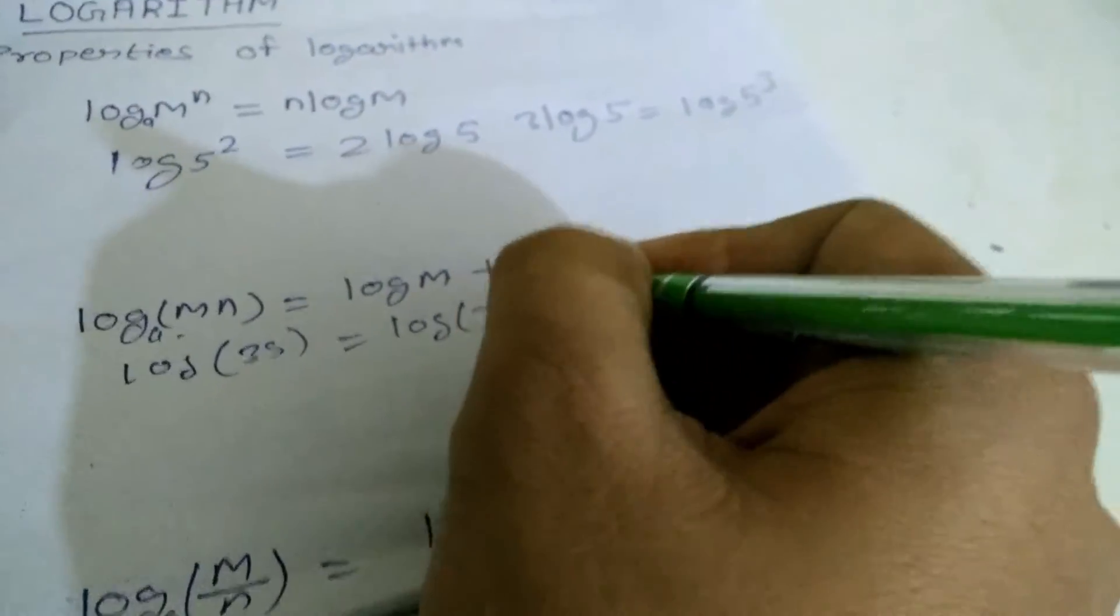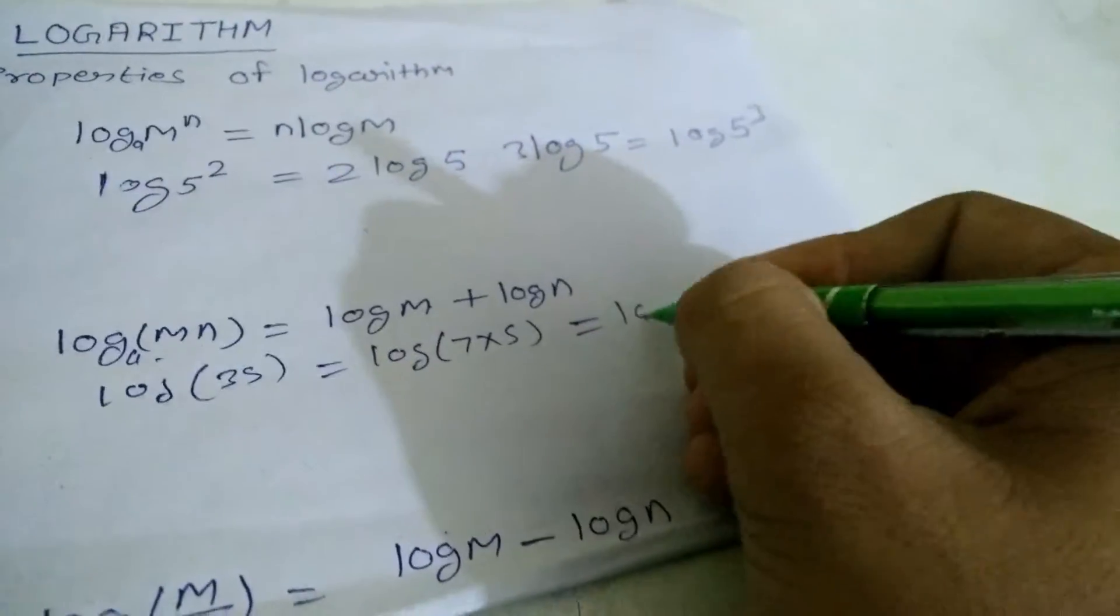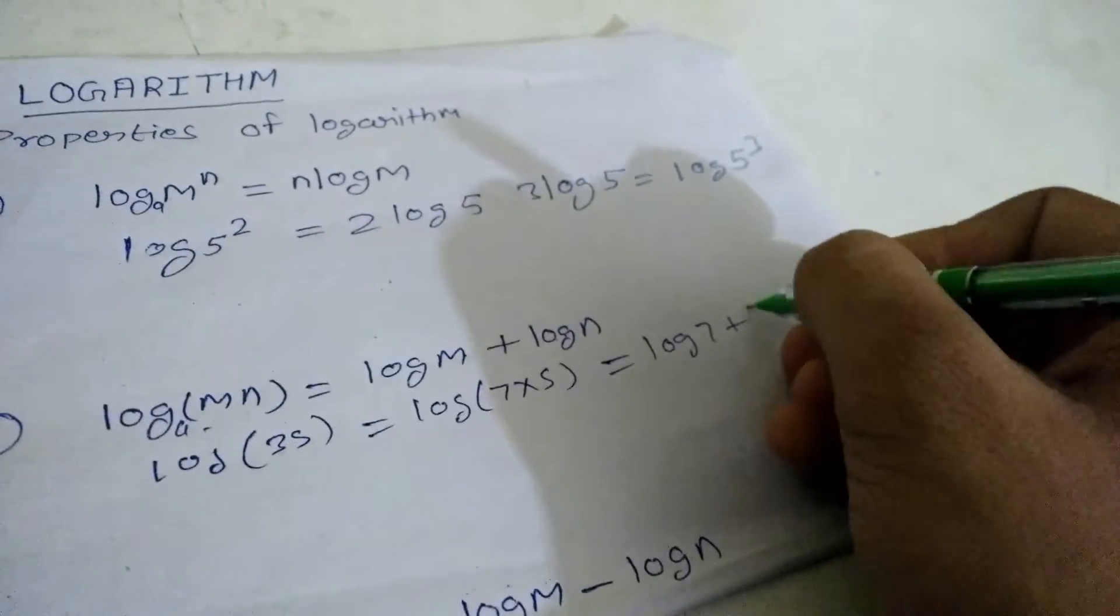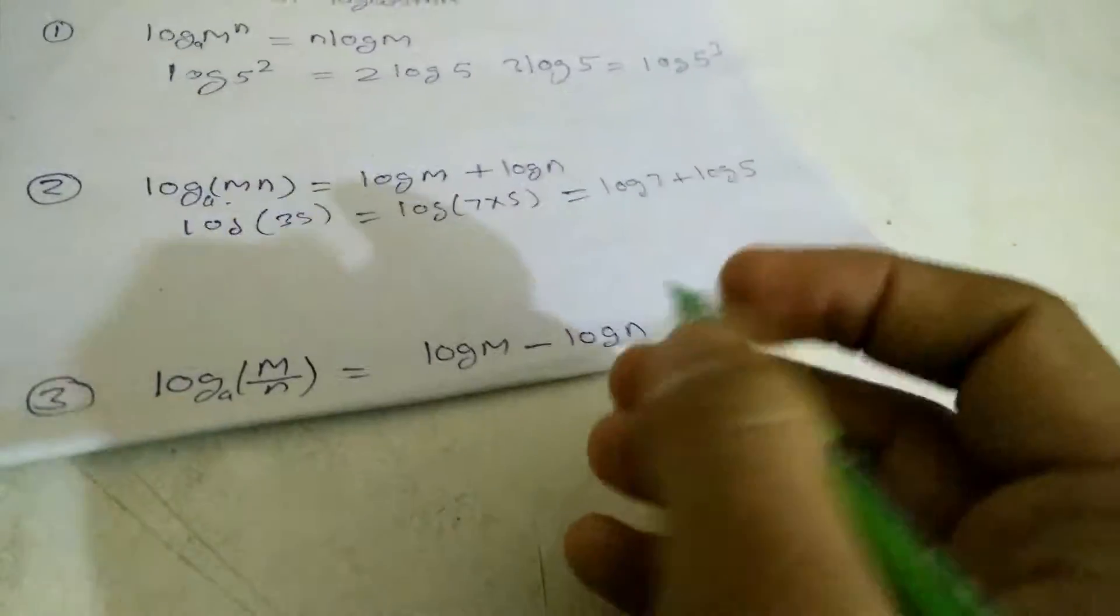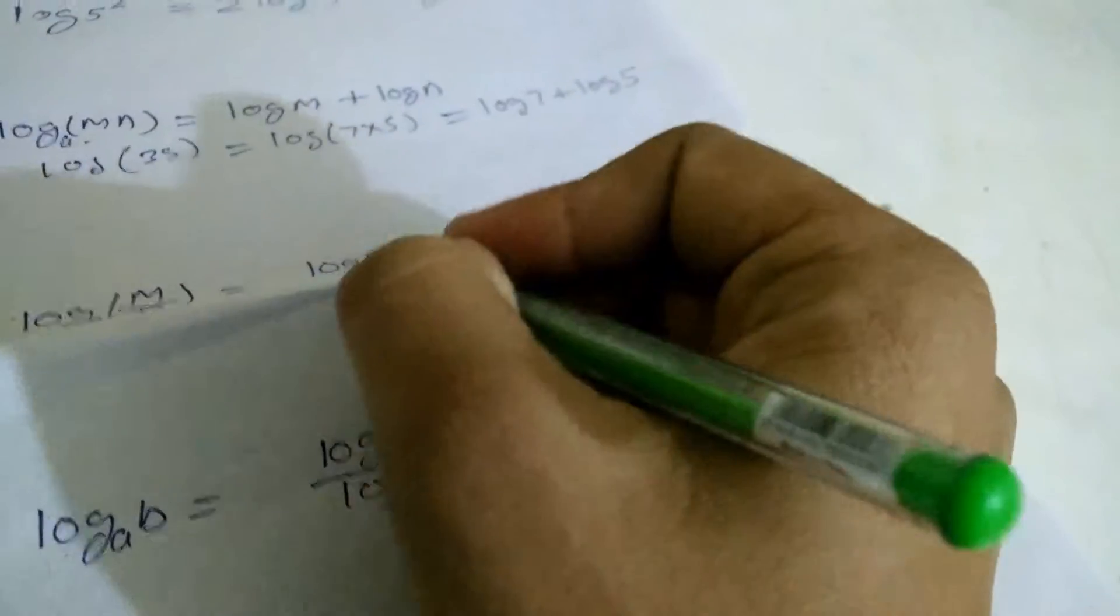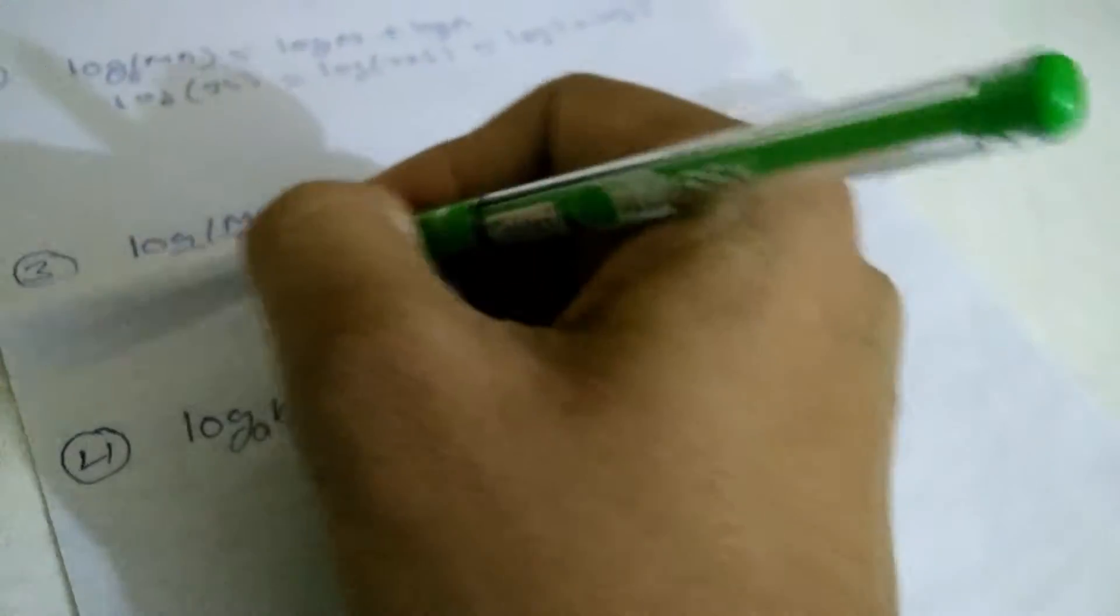Now third property is log m by n. We can write log m minus log n. If you have like this, log 2 by 5, then we can write log of 2 minus log of 5.